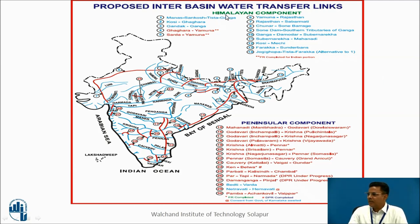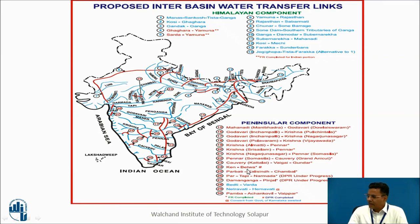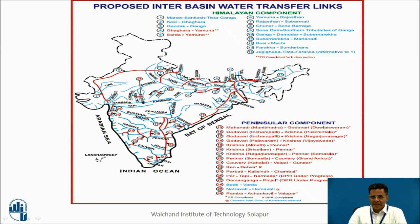There are two components: the Himalayan component and the Peninsular component. The Himalayan component has links such as Manas-Sankosh-Tista-Ganga, Kosi-Ghagra Link, Gandak-Ganga Link, Ghagra-Yamuna Link, Sarda-Yamuna Link, Yamuna-Rajasthan Link, Rajasthan-Sabarmati Link, Chunar-Sone Barrage, and Sone Dam-Southern Tributaries of Ganga Link. The Peninsular component includes links in South India such as Mahanadi-Godavari Link, Godavari-Krishna Link, Godavari-Krishna Link at Nagarjunasagar, Krishna-Pennar Link, Krishna-Pennar Link at Somasila, Ken-Betwa Link, and others. In the map, red lines show the links and blue lines show the rivers. More about the Himalayan and Peninsular development components will be discussed in the next part of the video.